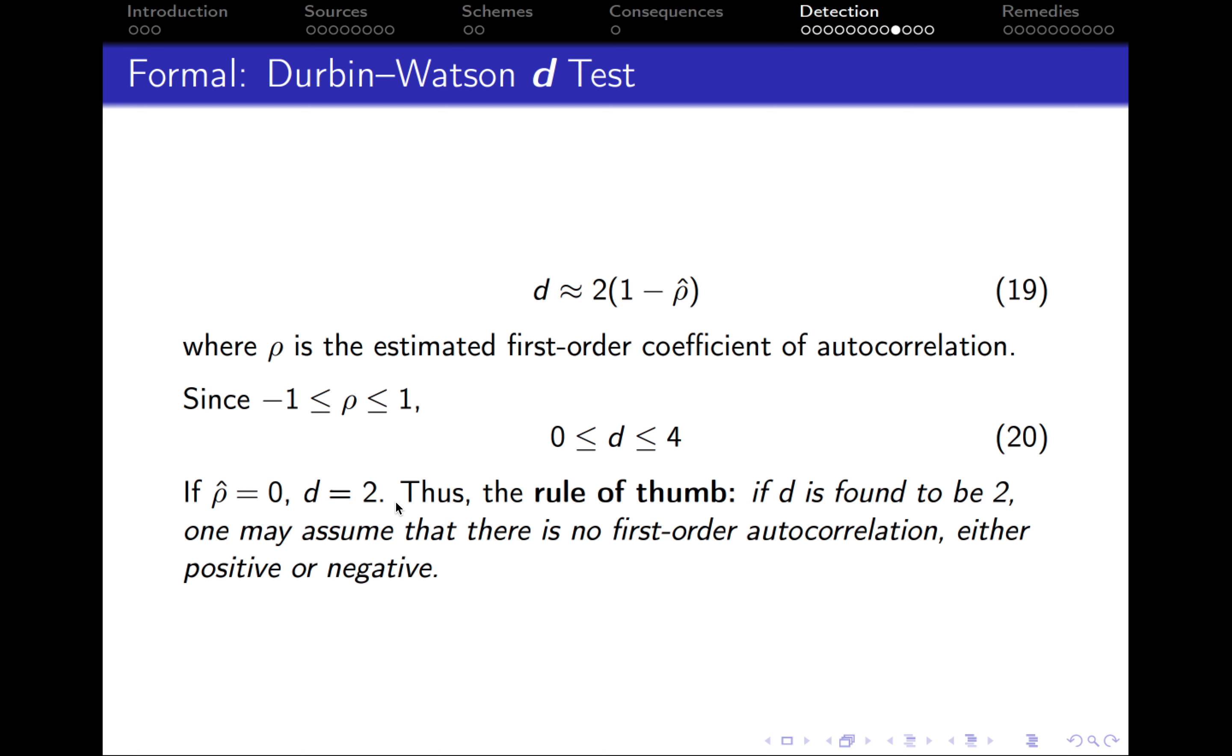And there is a rule of thumb that can be used when we discuss Durbin-Watson D test results. So if rho is equal to 0, we get, this is 1 minus 0, so Durbin-Watson is equal to 2.